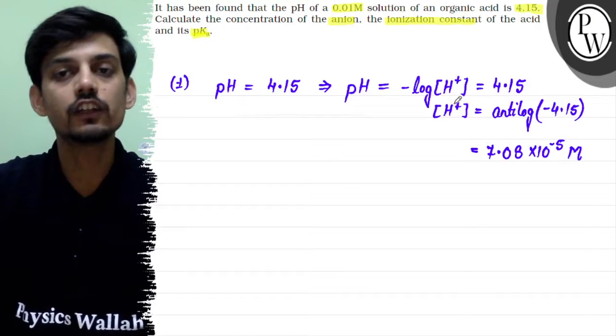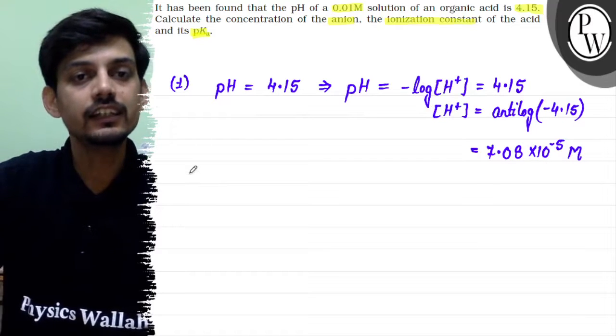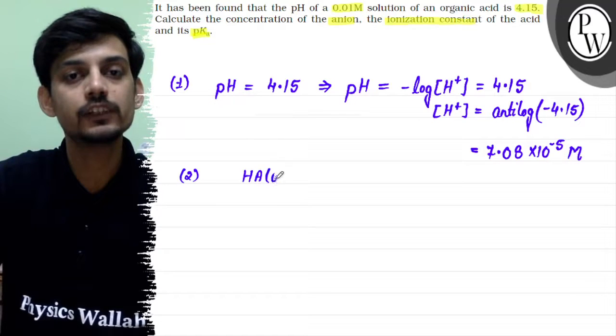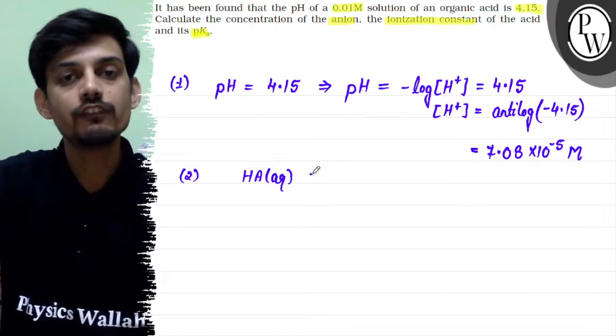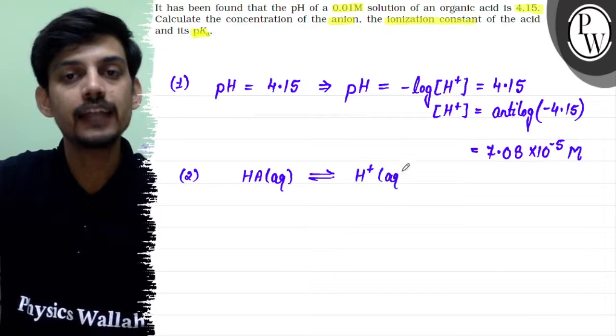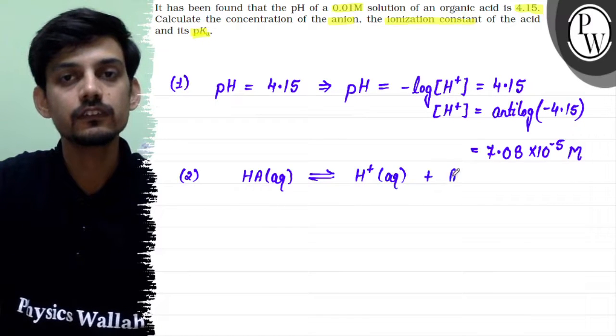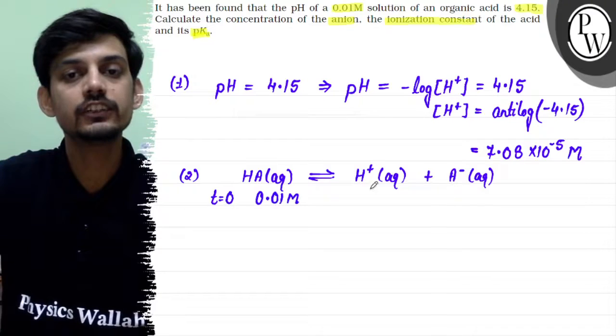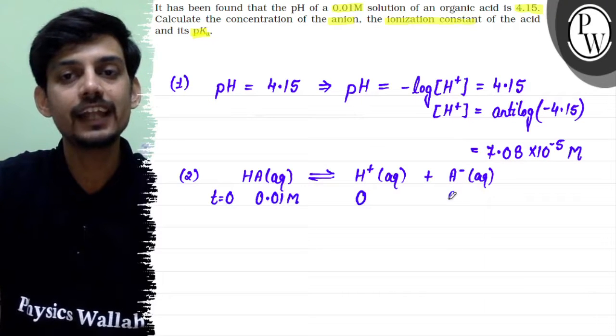Now let's say the organic acid is HA. We have a monobasic acid, assume HA, and this will be a weak acid because organic acids are generally weak. It will be ionized partially into H plus and A minus ion. The initial concentration is 0.01 molar, and ionization will equal H plus and A minus to be 0.